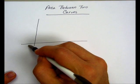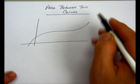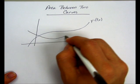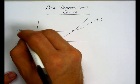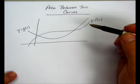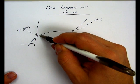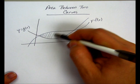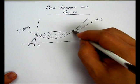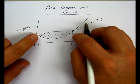So let's say we had two curves, f of x and g of x, and they intersected somewhere, and I'm interested in finding the area between the two curves, from x equals a to x equals b, where they intersect.